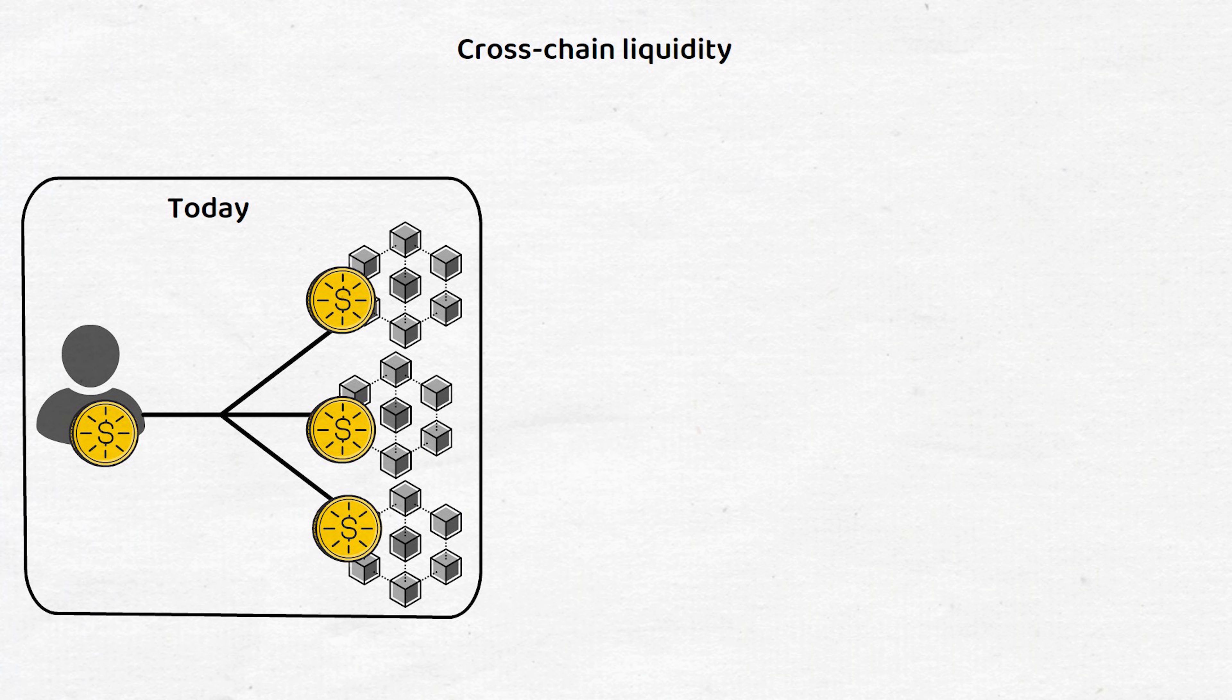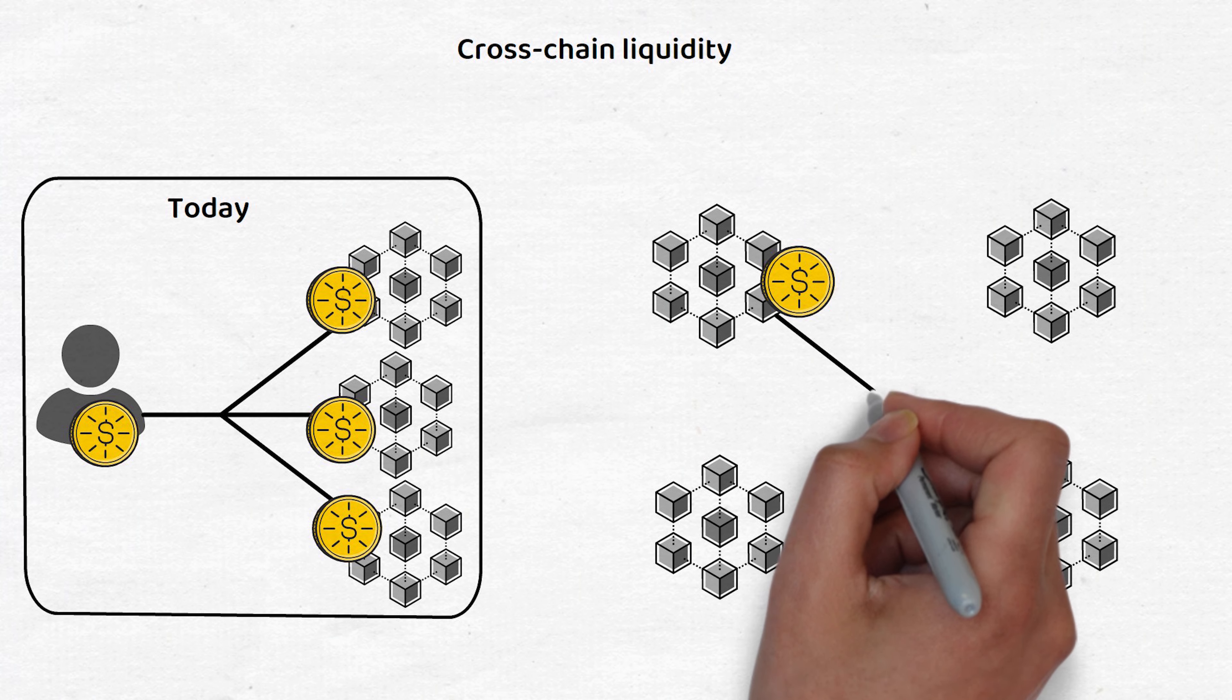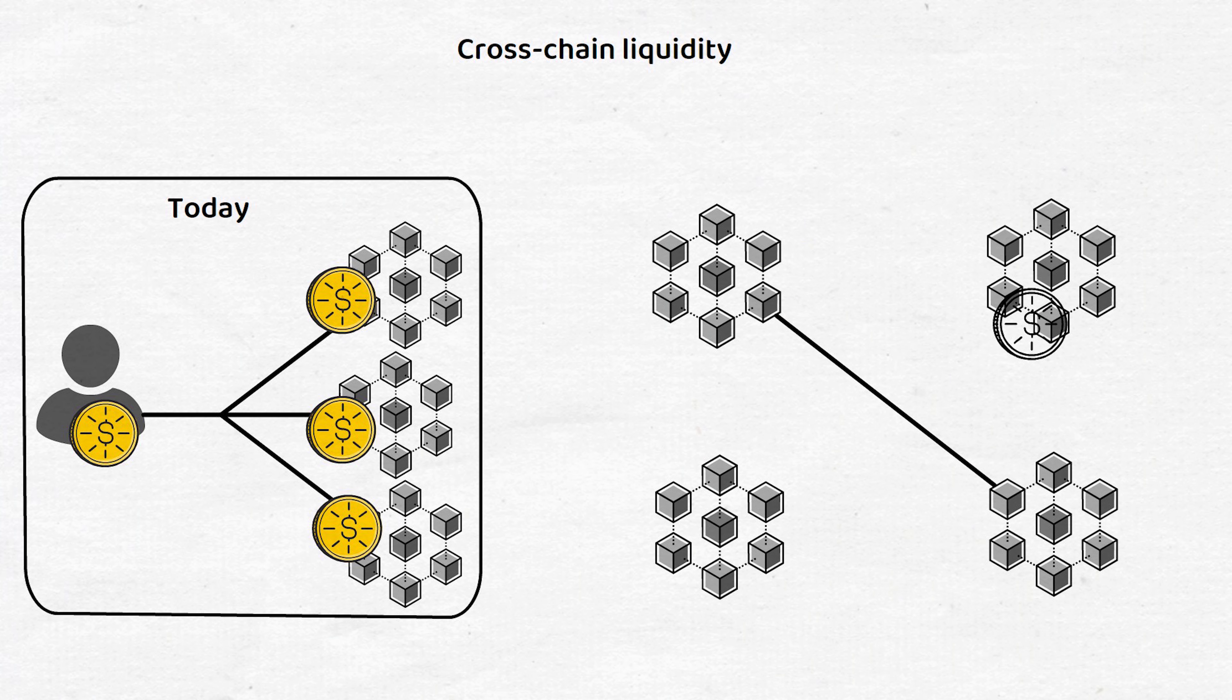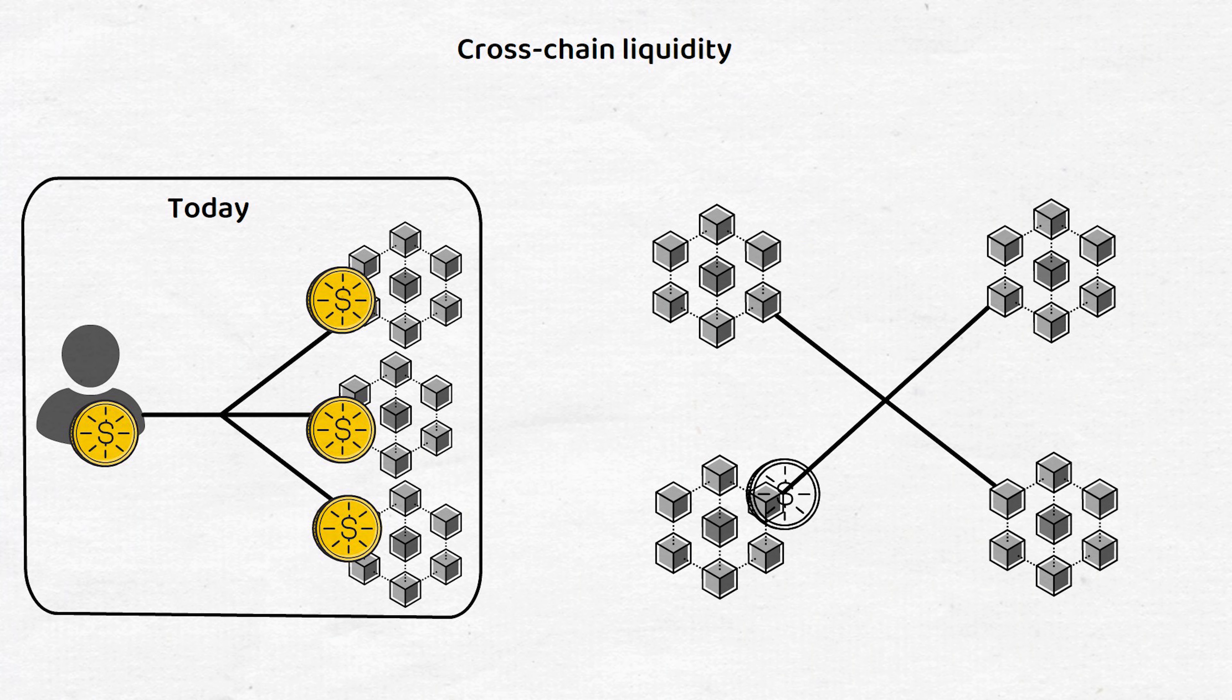However, to facilitate the continued growth of these ecosystems, the flow of liquidity between these blockchains needs to be constant and seamless, and this is where Wormhole comes in.